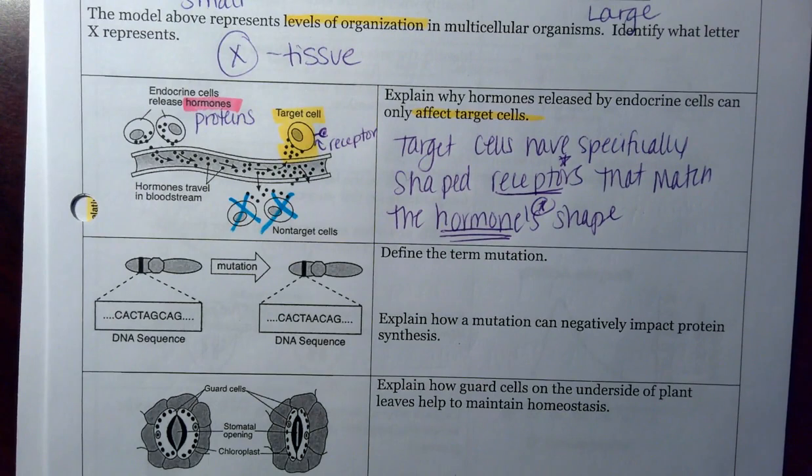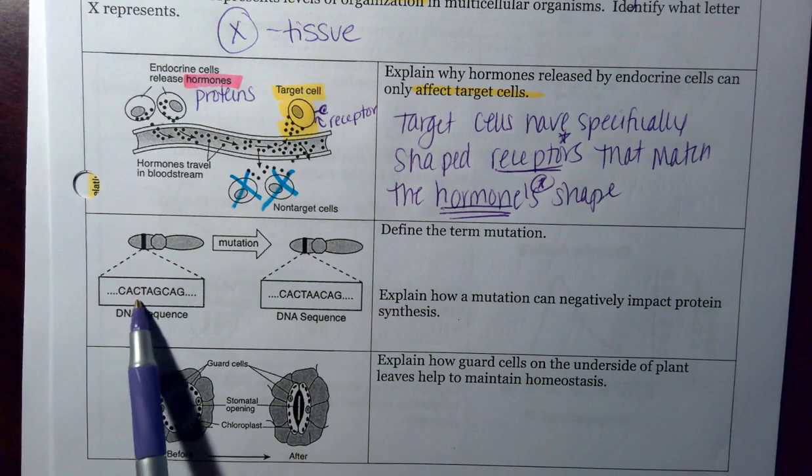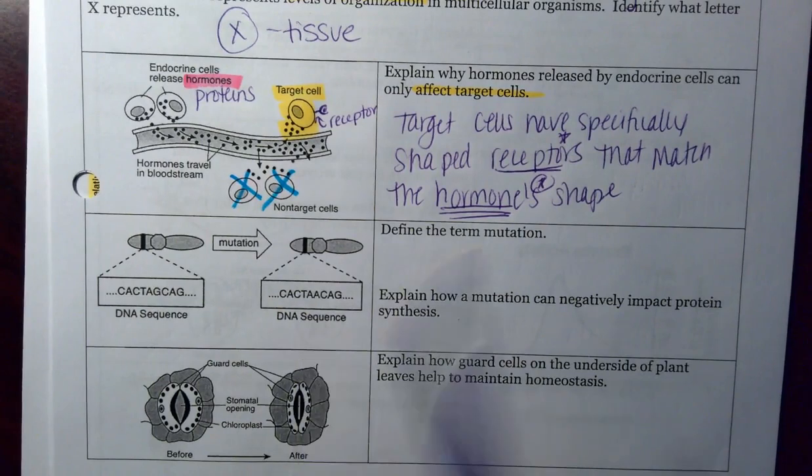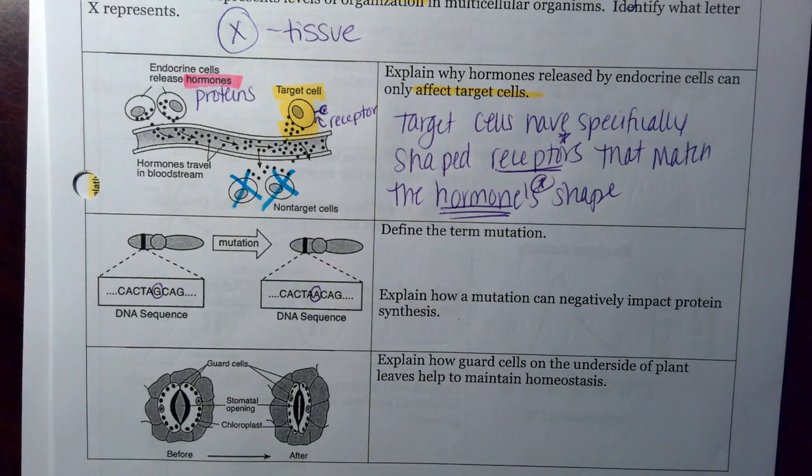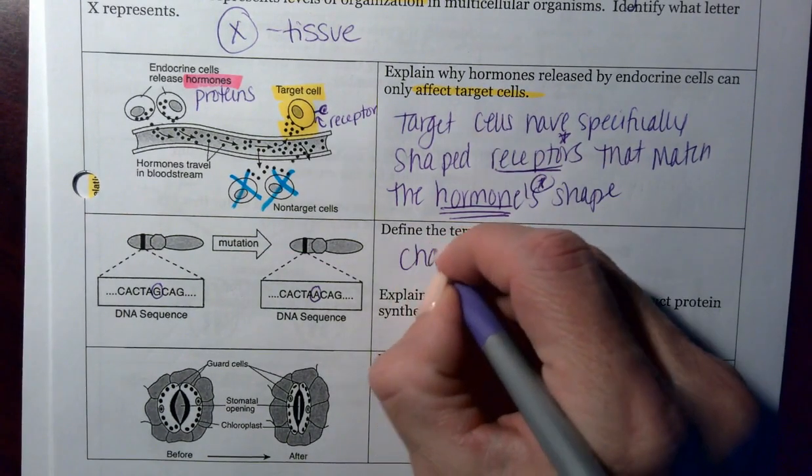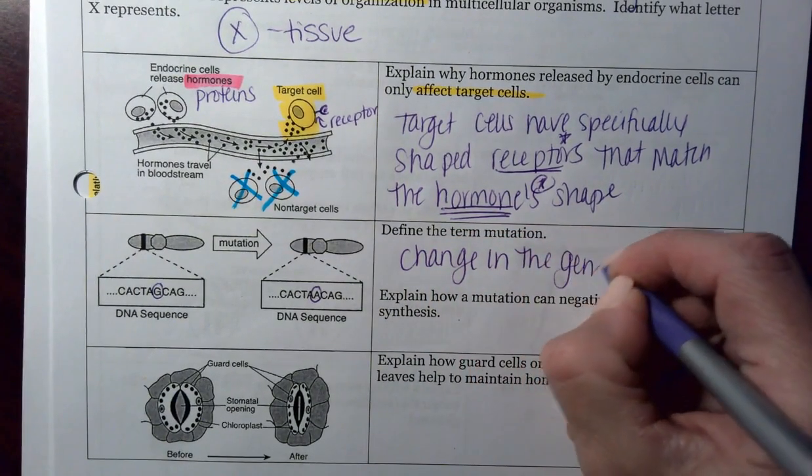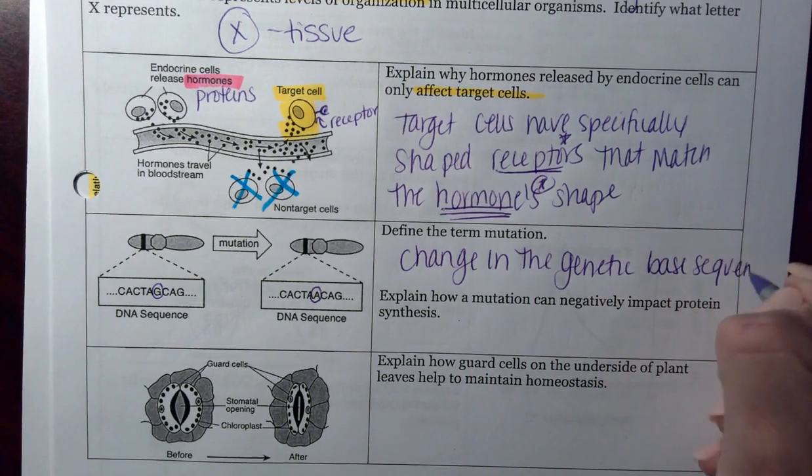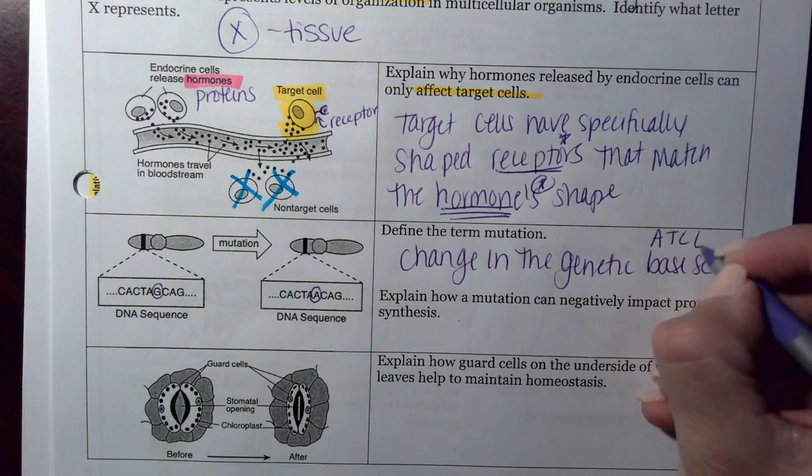Our next one wants you to define the word mutation. And that's because looking here, I have C-A-C-T-A-G-C-G-A. C-A-C-T-A-A. So looking here, I have a change. It's just one letter change, but it still counts as a mutation. A mutation is a change in the genetic base sequence. Remember, we have four different bases. A, T, C, and G.